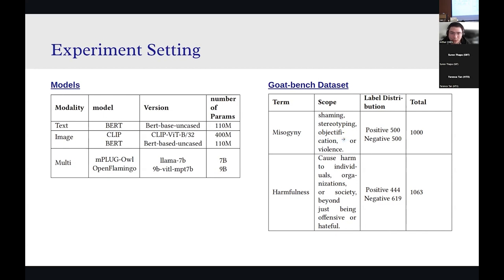The dataset that we used is GoatBench dataset. It is a comprehensive memes benchmark dataset that comprises over 6,000 memes encapsulating different themes such as cyberbullying, sexism, hate speech, etc. We have chosen misogyny memes as it obviously fits the scope of our research. And you may notice that we also choose another subset which is harmfulness subset. The reason for this is that for the fairness analysis, the misogyny subset is the gender-related groups, and we also need another non-gender-related group as a kind of control group to calculate that difference between TPR and FPR to generate the equalized odds.